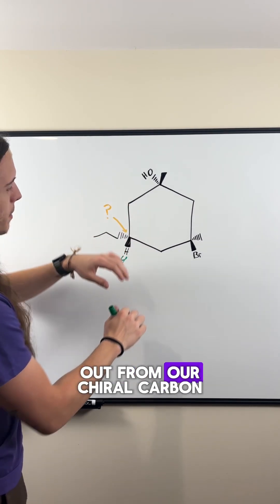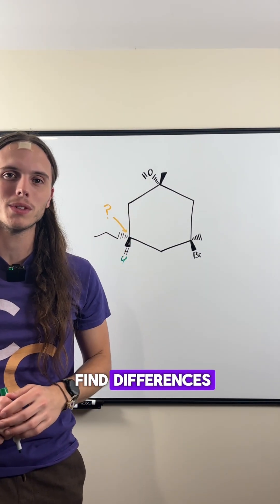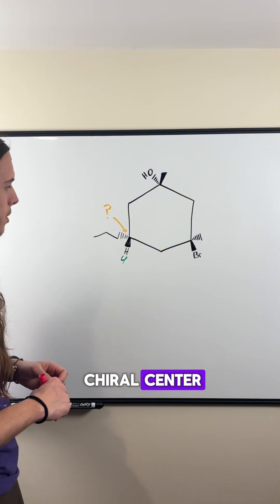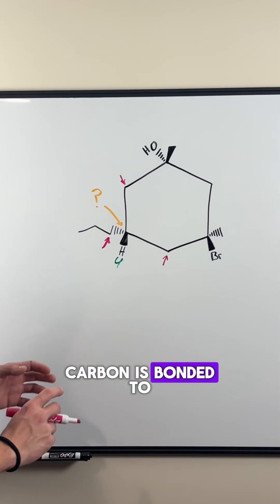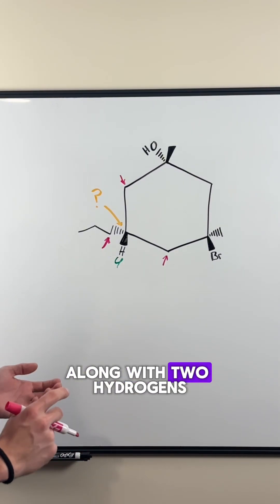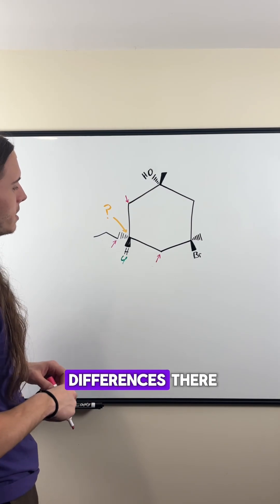We need to branch out from our chiral carbon and we have to find differences. If we branch one carbon out from the chiral center, we see that each carbon is bonded to another carbon along with two hydrogens. Since there were no differences there,